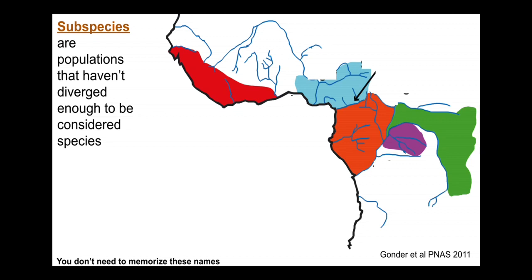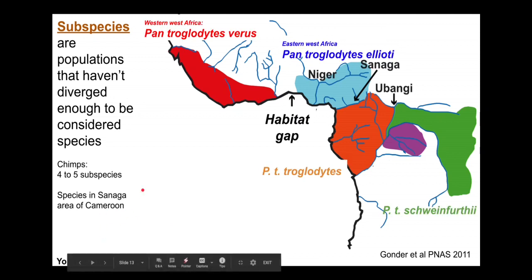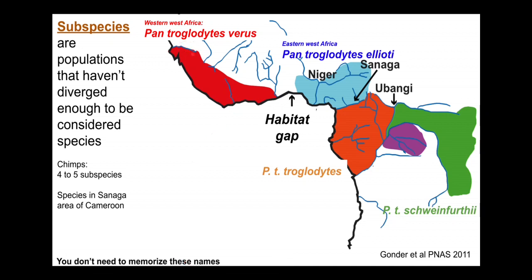We'll be discussing subspecies of chimpanzees here. You don't need to memorize these names, but there are several subspecies of chimpanzees currently recognized all throughout West Africa. Depending on how you count them, there are four to five subspecies. There is Pan troglodytes verus in West Africa — Senegal, Guinea, down through Sierra Leone and Côte d'Ivoire. Then there's a large habitat gap between the different subspecies. In Central Africa there is Pan troglodytes troglodytes, and Pan troglodytes schweinfurthii. In the middle are bonobos, which are a completely separate species, Pan paniscus, surrounded by chimpanzees. There's also a thought-to-exist subspecies in Cameroon — the Sangha subspecies.